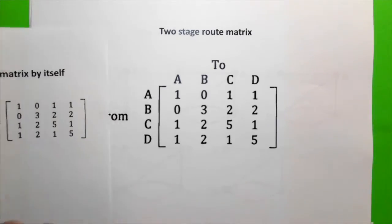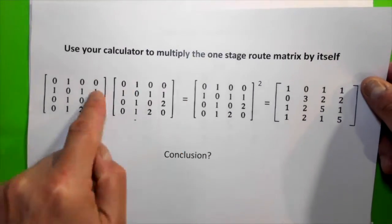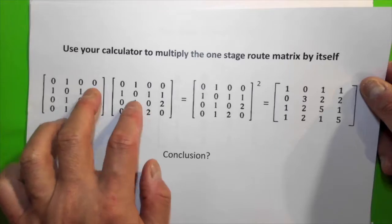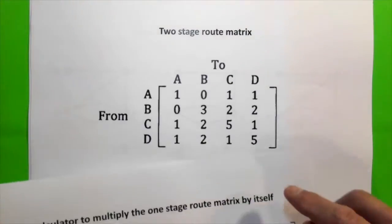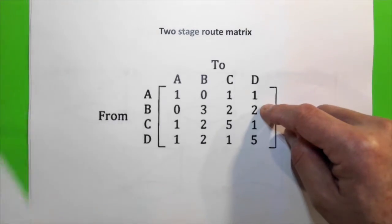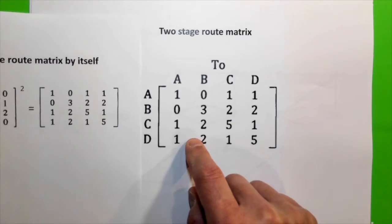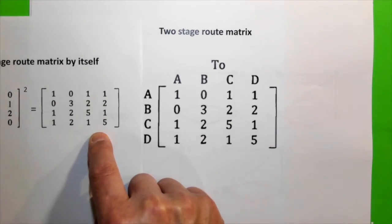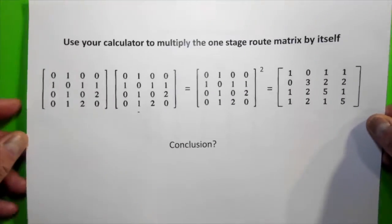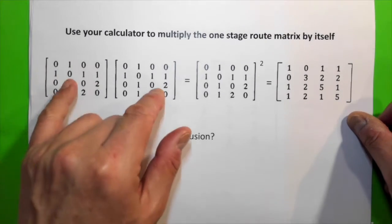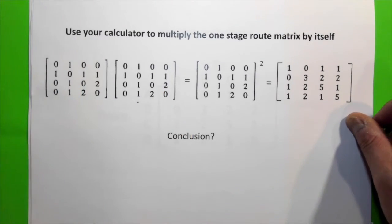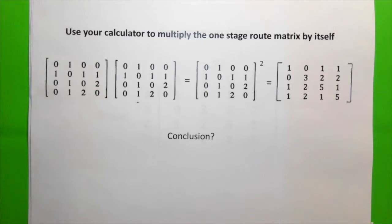So, from the square of a one-stage route matrix, you actually obtain the two-stage route matrix. So, the conclusion is, when we square a one-stage route matrix, we actually get a two-stage route matrix.